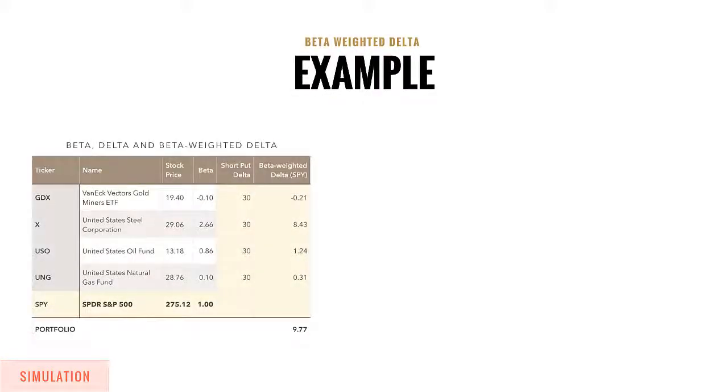On the left you'll notice a hypothetical portfolio of five different symbols: GDX, X, USO, and UNG, all relative to the SPY. These are the gold miner ETF, US Steel, the United States Oil Fund, and the United States Natural Gas Fund. The stock prices are at different ranges between 19 and 29 dollars per share.